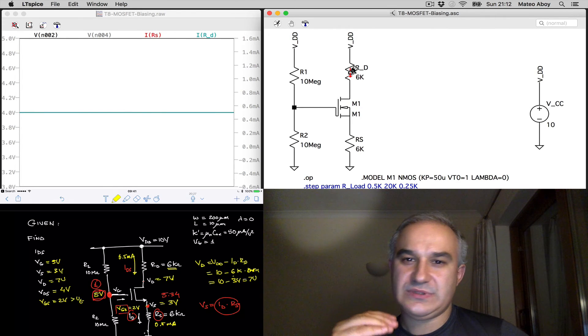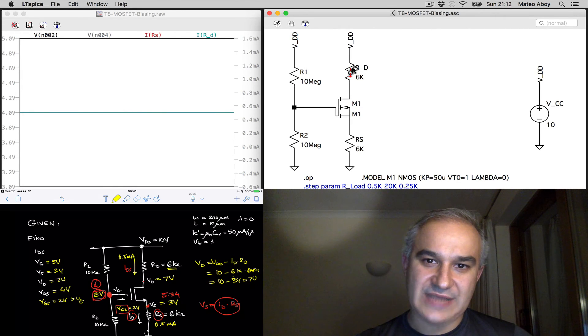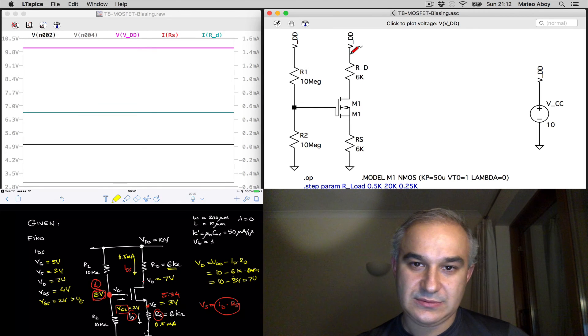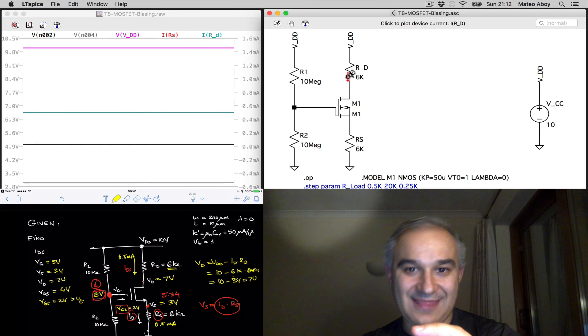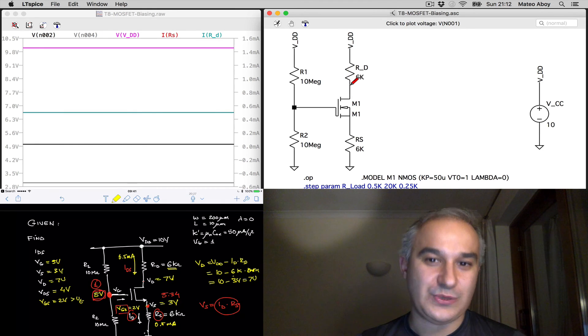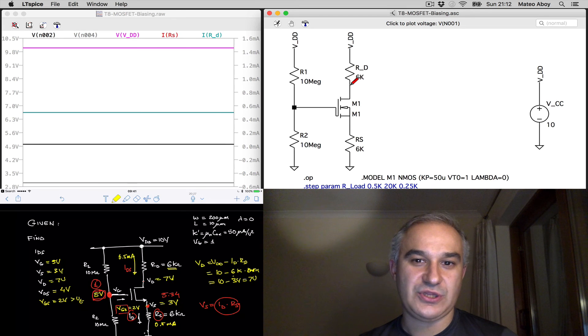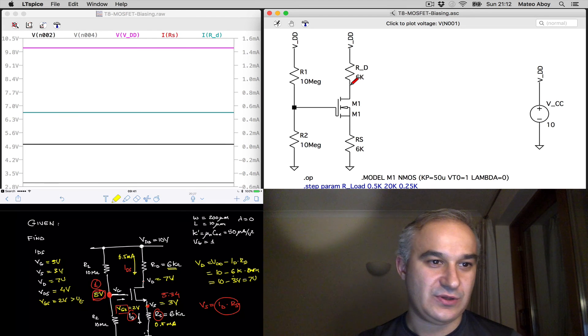And therefore, since we have 10 volts at the drain, and a drop of 3 volts through the drain resistor, we expect that the voltage at the drain will be 7 volts.